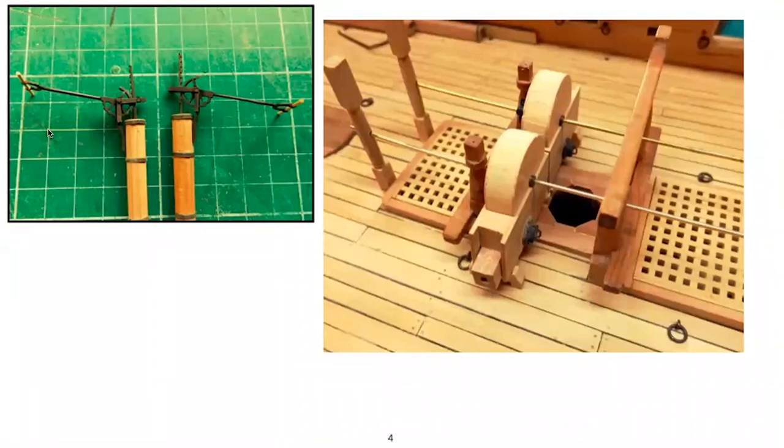The chain pumps, on the other hand, shown there on the right, used a rotary system to haul bilge water up in saucers attached to the chains, a pulley circular system that stretched from the top cisterns, which you can see there, to the bilges below. These were powered via the winch bars that stretch across both of the hatches.